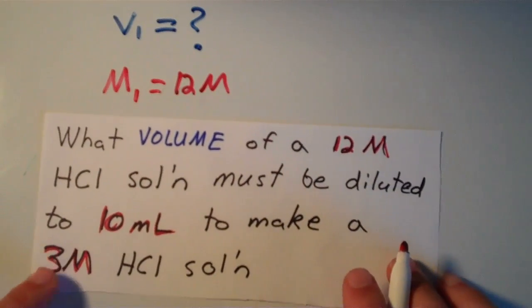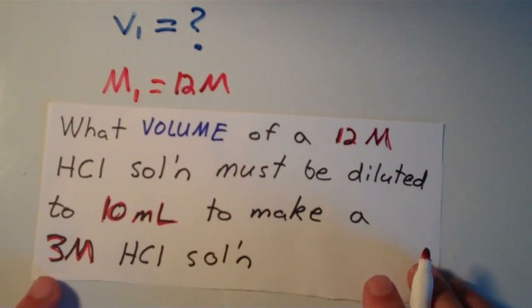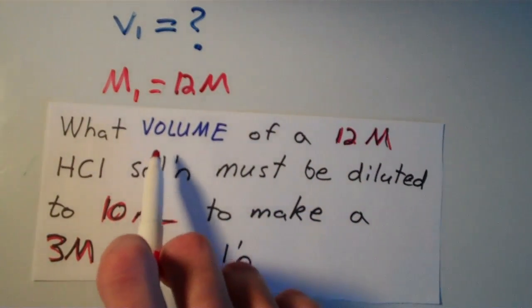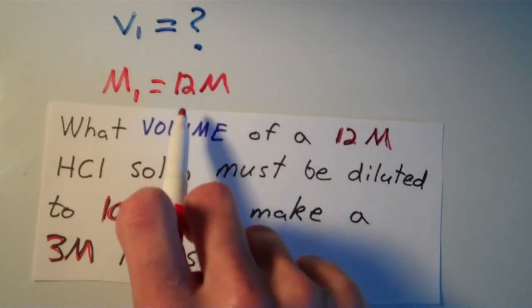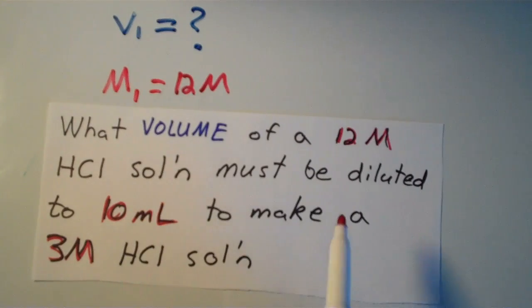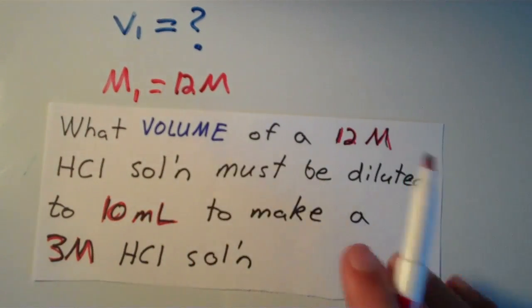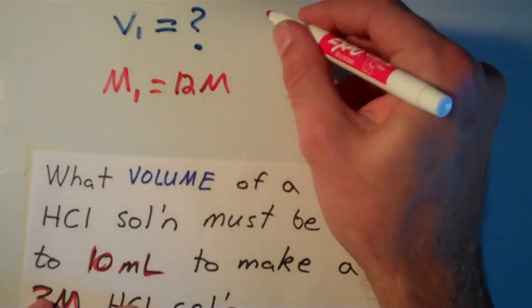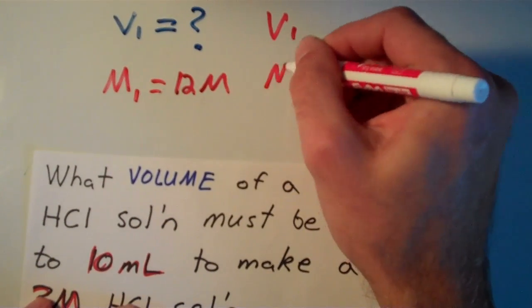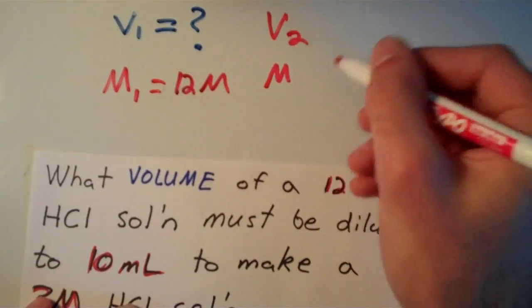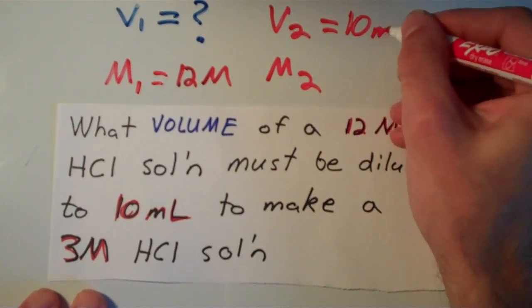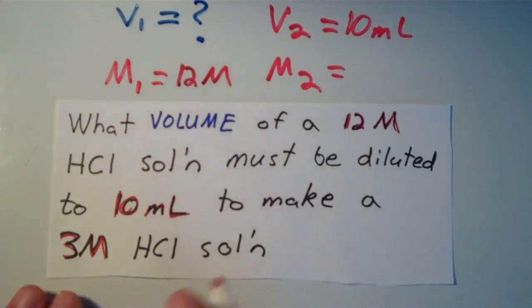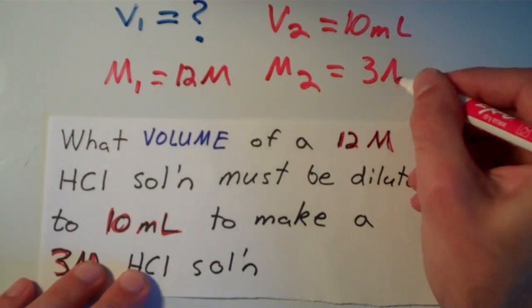And then it says what volume of a 12 molar solution. So we have the volume unknown, we have the molarity of 1, that is also 12 molar. And it says that we have to dilute it to 10 milliliters to make a 3 molar HCl solution. So we're going to have a V2 and an M2. The volume given is 10 milliliters, and the molarity given is 3 molar.